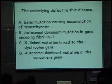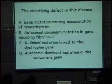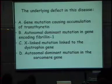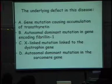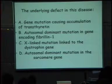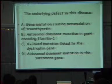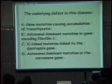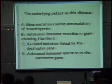The choices are: A — a gene mutation causing accumulation of transthyretin; B — an autosomal dominant mutation in the gene encoding fibrillin-1; C — an X-linked mutation linked to the dystrophin gene; or D — an autosomal dominant mutation in the sarcomere gene. From that information you should know what each of those four diseases are and see if it matches up with the clinical history.